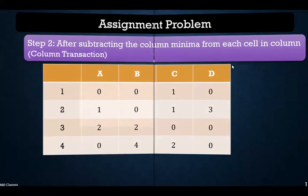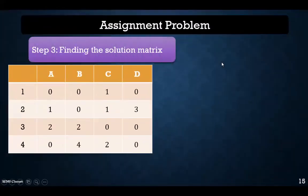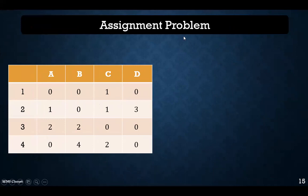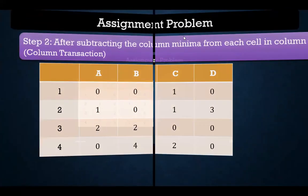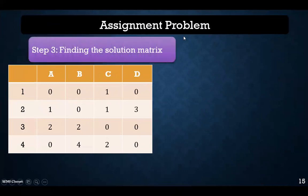We have obtained this particular matrix after subtracting the column minima. Now we go to find the solution matrix. For this column, we have only one zero, so we pick it. For another column, we also have only one zero, so we pick it. Since we've picked those zeros, we cross the remaining zeros in that row and column. Now we have two options — we can pick either one of two remaining zeros, creating a tie.